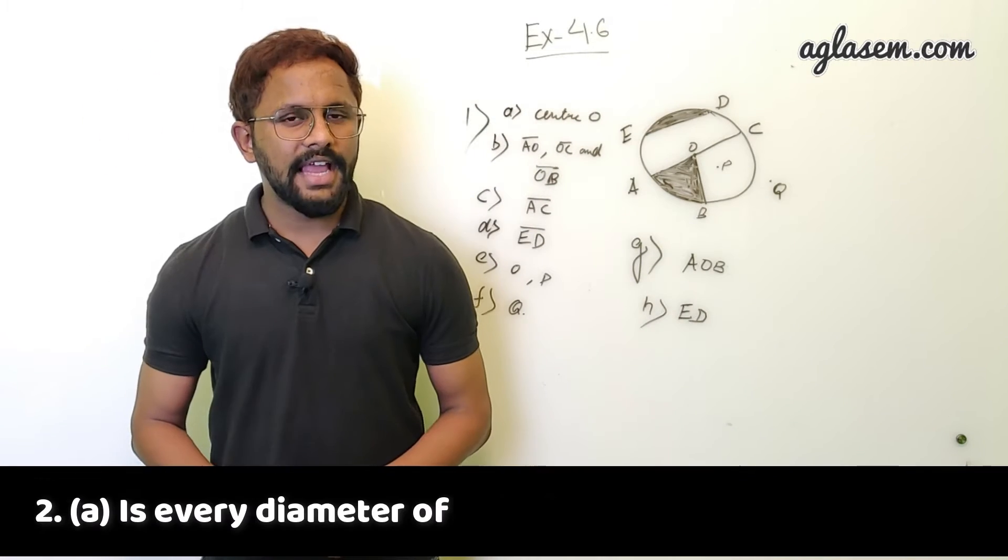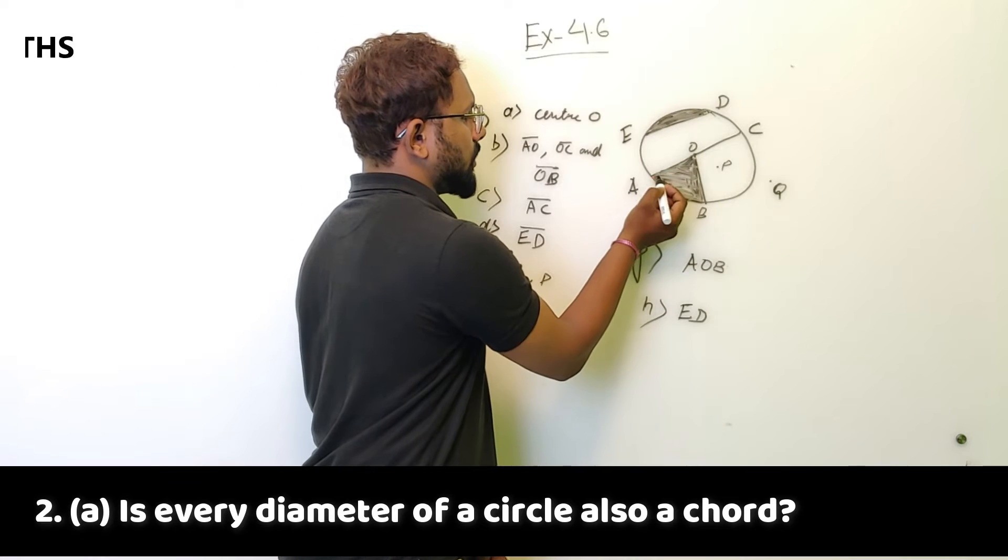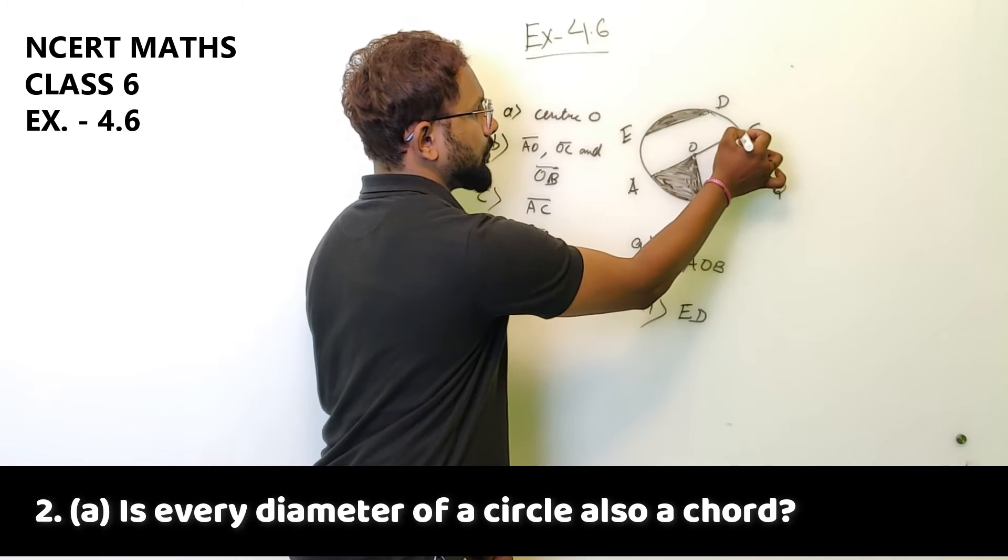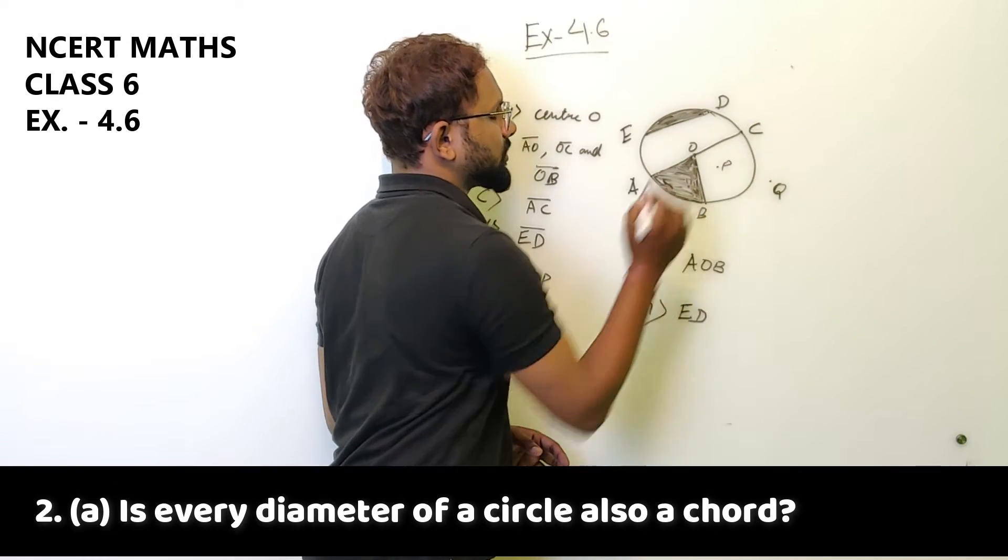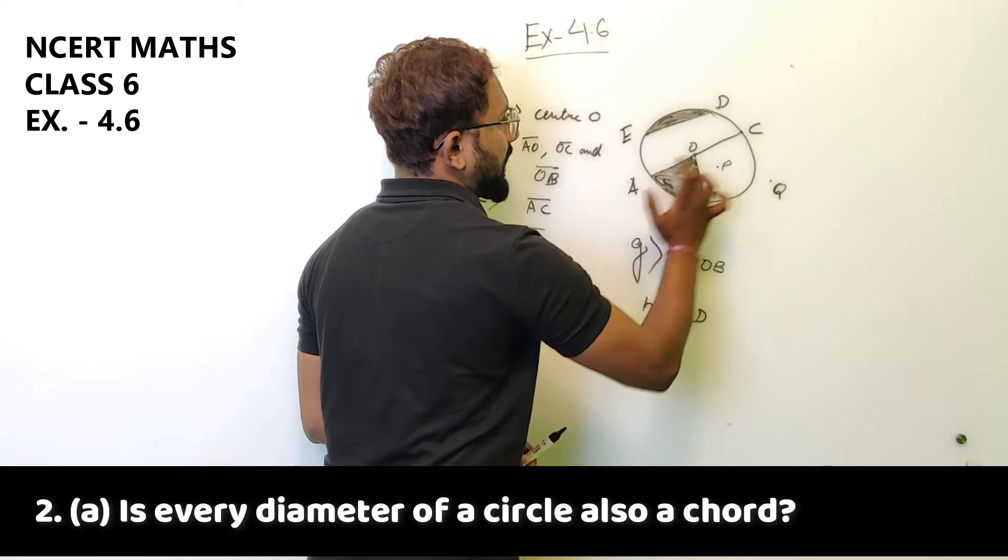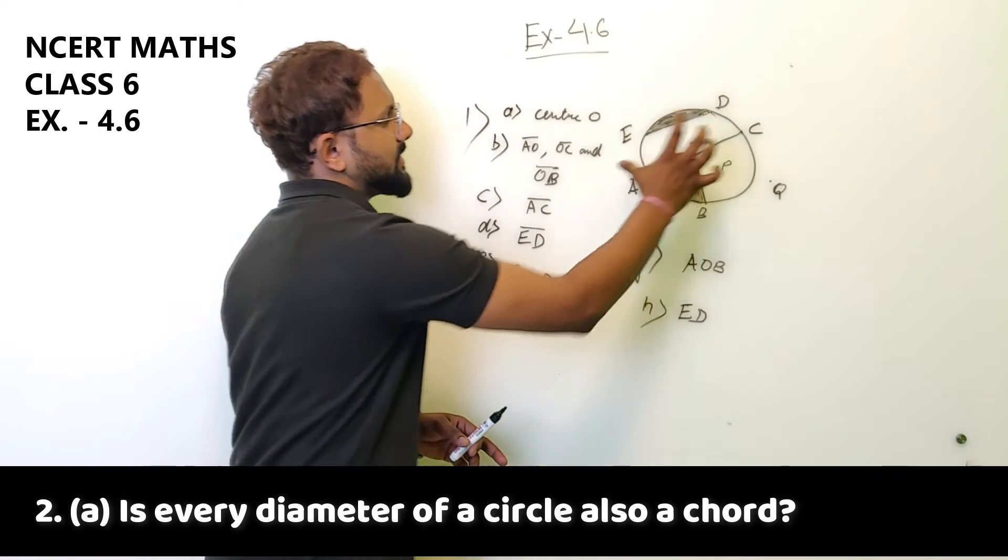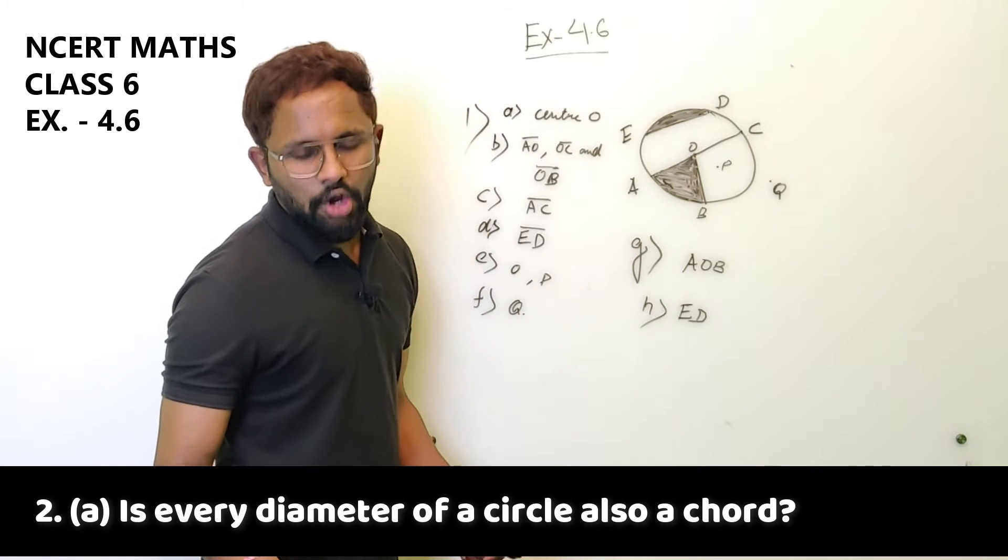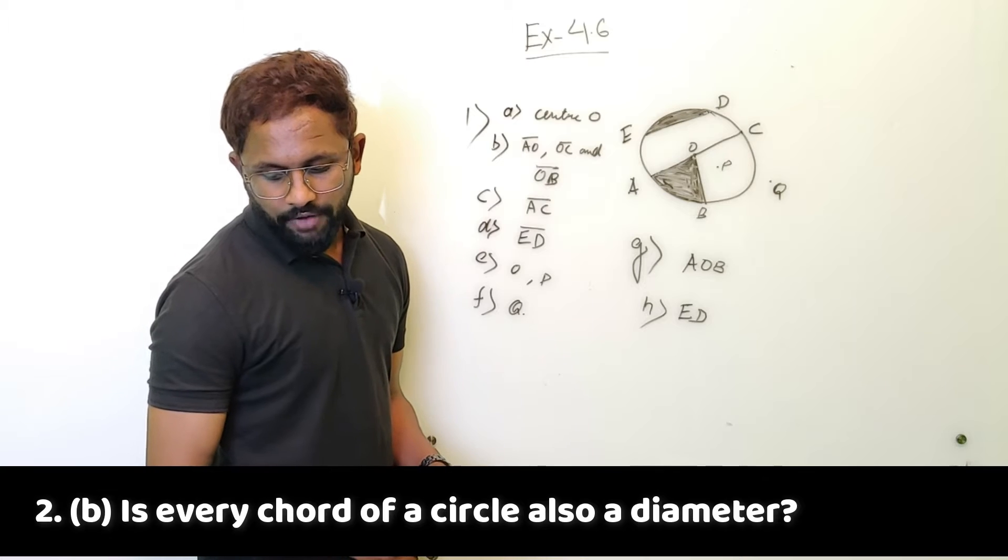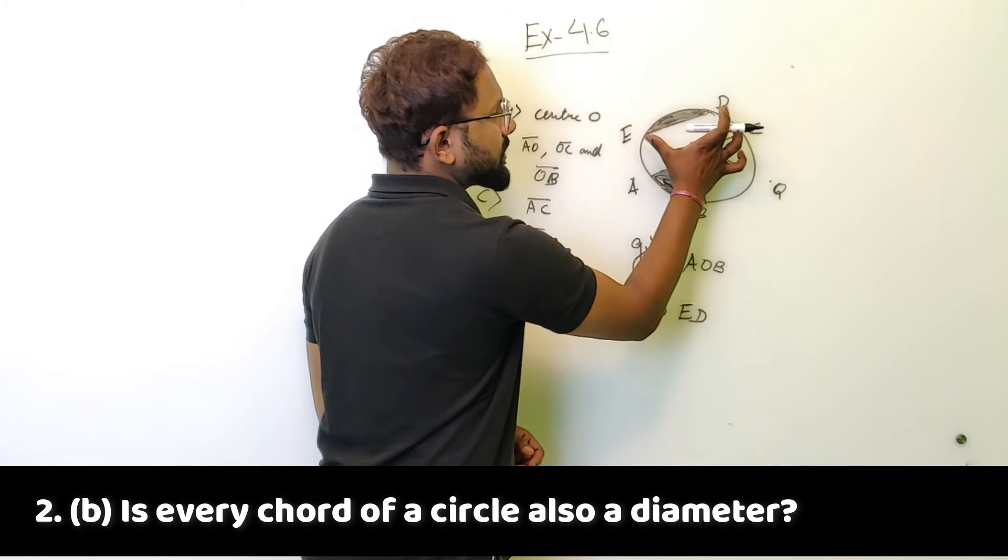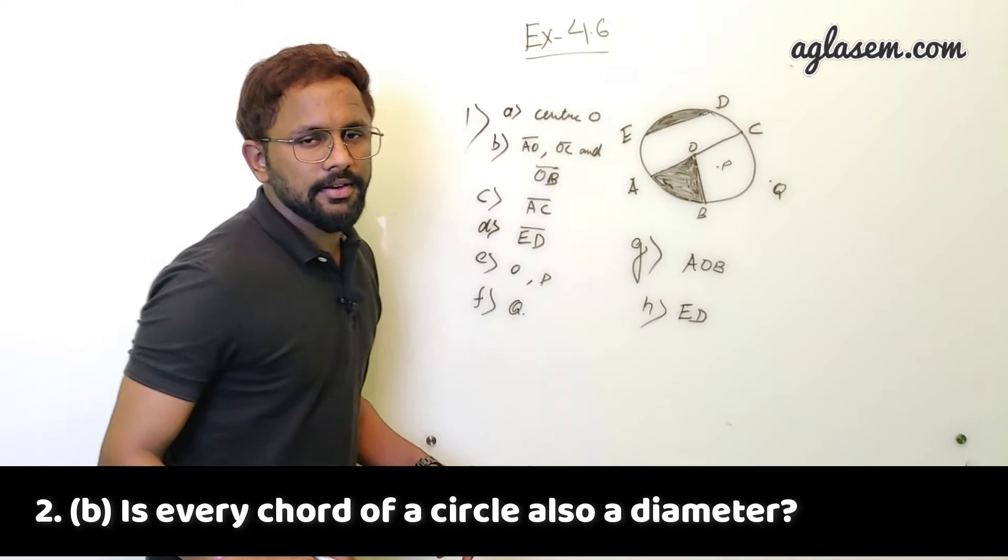Next question is, every diameter of a circle is a chord. A chord is when on a circle two points are connected by a line. If the two points are meeting, that is called a chord. So this point A and point C is met by the line segment AC. So this is a chord and this is also a diameter. So every diameter is a chord. Now the B part is, is every chord of a circle a diameter? This is also called point E and point D, line segment ED, but it is not a diameter. So this statement is false.